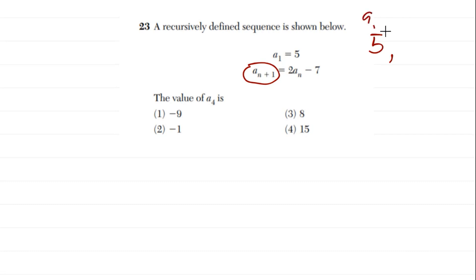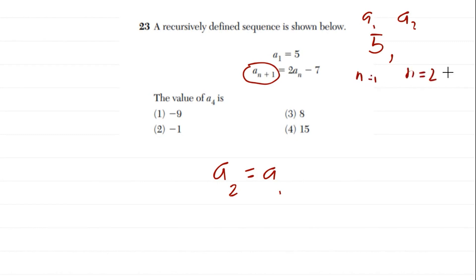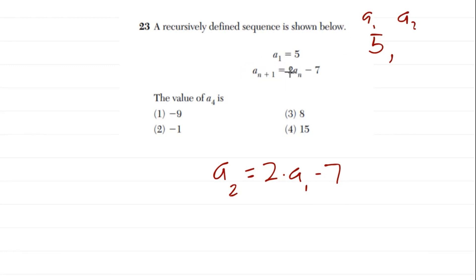To find a sub 2: a sub 2 equals 2 times a sub 1 minus 7. We know a sub 1 is 5, so that's 2 times 5 minus 7, which equals 10 minus 7 equals 3. So a sub 2 is 3.